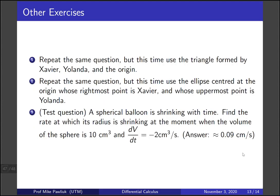Let's end with some other exercises. Repeat the same question that we just did, but this time use the triangle formed by Xavier, Yolanda, and the origin, not the rectangle. The second exercise is to do the same question, but use the ellipse centered at the origin whose rightmost point is Xavier and whose uppermost point is Yolanda. And then a sample test question would be: a spherical balloon is shrinking with time. Find the rate at which the radius is shrinking at the moment when the volume of the sphere is 10 centimeters cubed, and dV/dt is minus 2 centimeters cubed per second. The answer is around 0.09 centimeters per second.